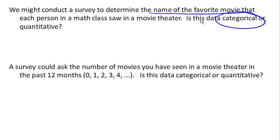Now suppose instead the survey asked the number of movies they had seen in a movie theater in the last 12 months. That is now quantitative, because those are numbers, and we can add them. So if I saw two movies and you saw three, then together we saw five movies — addition makes sense here.